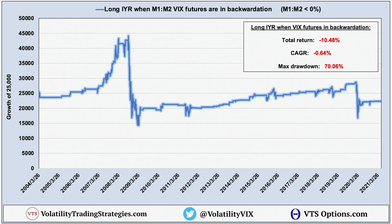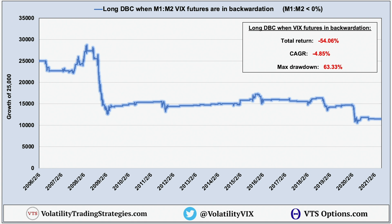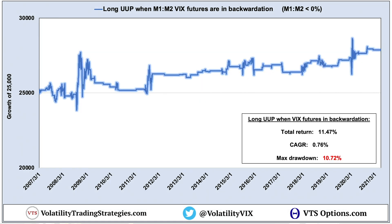This one will probably surprise a few people — this is the IYR, which is a real estate ETF, and the results are clearly terrible. The 70% drawdown makes it a complete non-starter; even outside of that, there really isn't much to build on. Additional filters would help but not enough to close the gap to some of the other asset classes. Next on the list is DBC, which is a broad commodities ETF, and as bad as real estate was, this one is even worse. There's nothing here of any interest for traders either long or short — simple cash is far superior in a crisis.